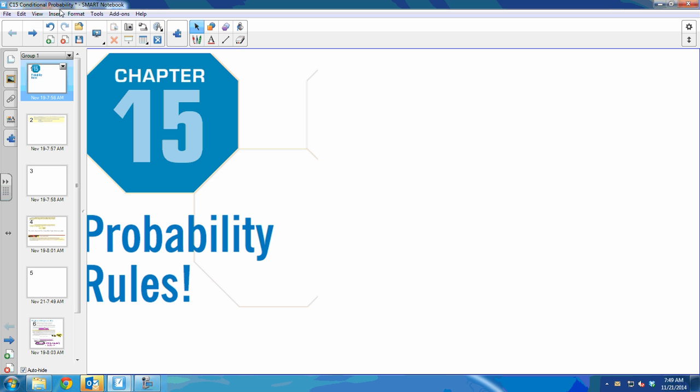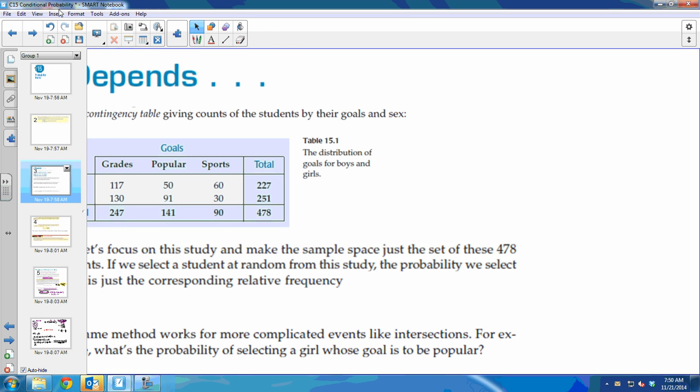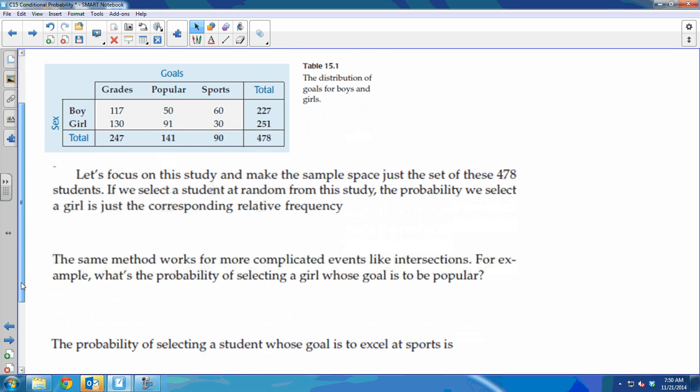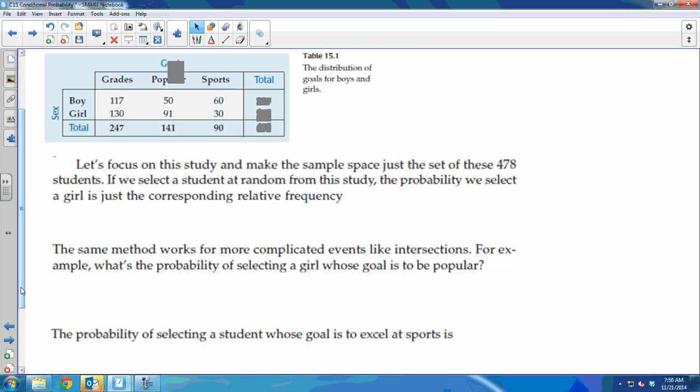So in chapter three, we had contingency tables, which is what's on the screen. It's just a table of a bunch of different results where you have two categorical variables. In this one, it was gender versus what their goal in school was. Did they want to have good grades, be popular, or be good at sports? We were finding probabilities. We didn't call them that, we called them relative frequency.